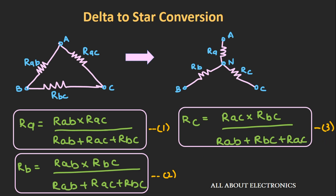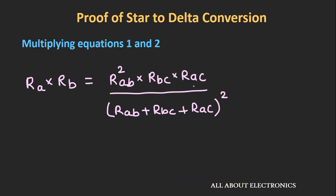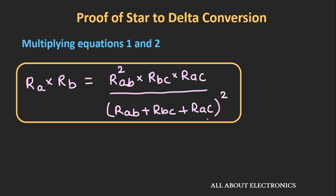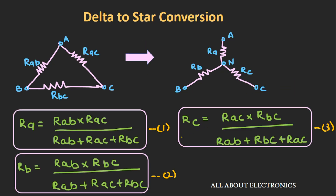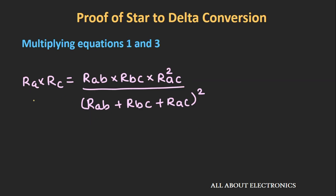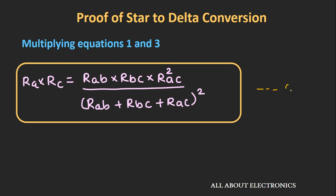We will now multiply equations 1 and 2. Multiplying equations 1 and 2 gives: Ra·Rb = Rab²·Rbc·Rac divided by (Rab + Rbc + Rac)². Call this equation 4. Similarly, multiplying equations 1 and 3 gives: Ra·Rc = Rab·Rbc·Rac² divided by (Rab + Rbc + Rac)². Call this equation 5.